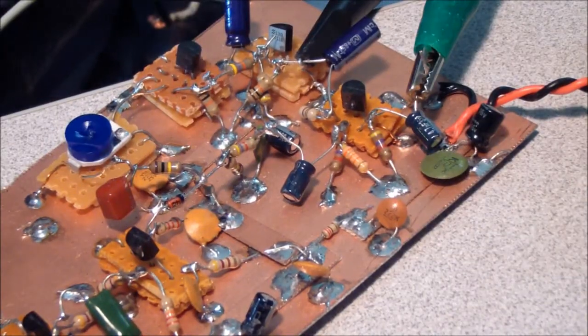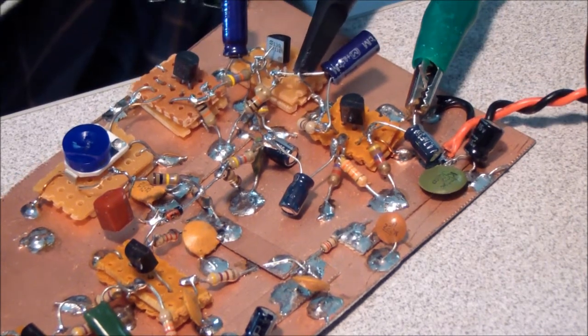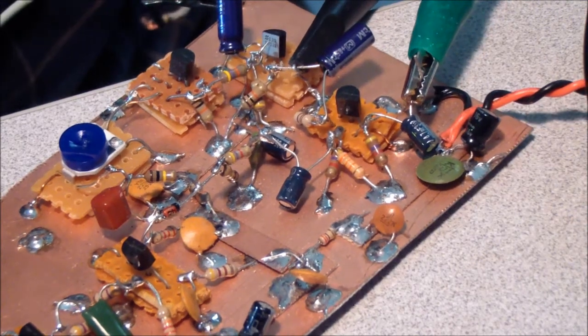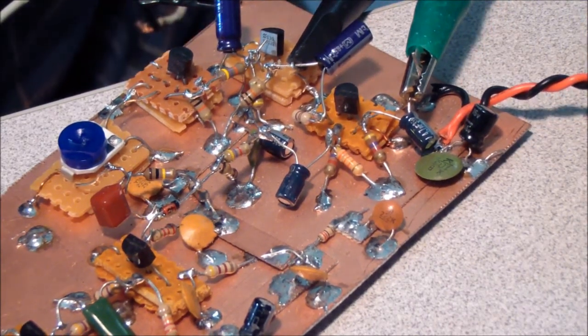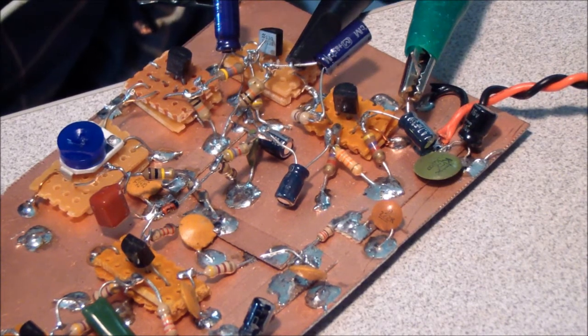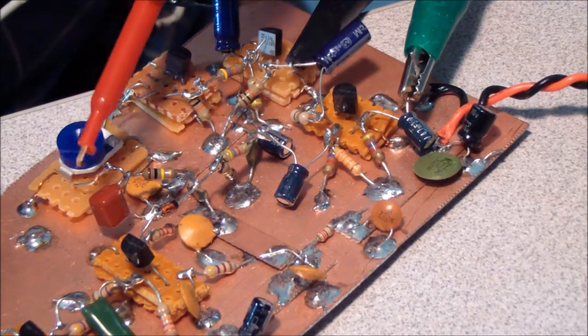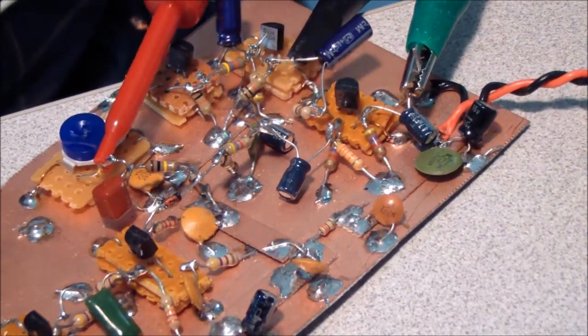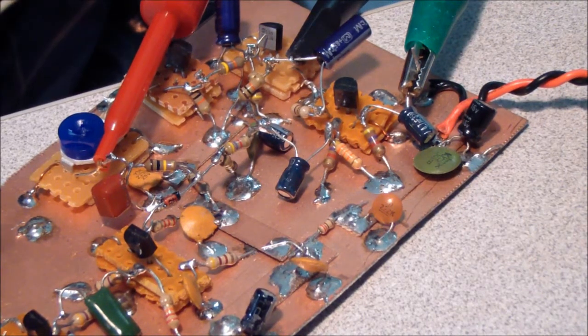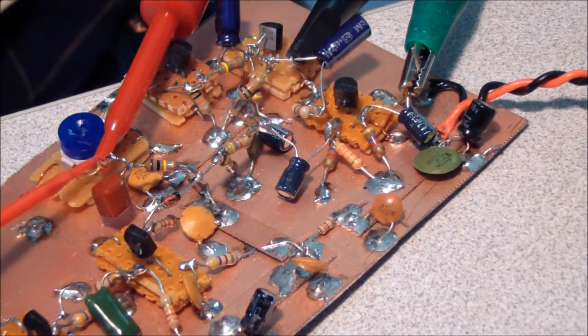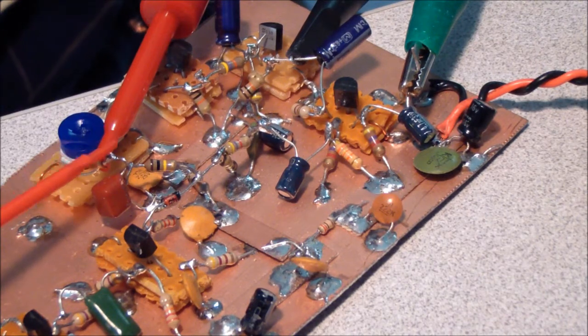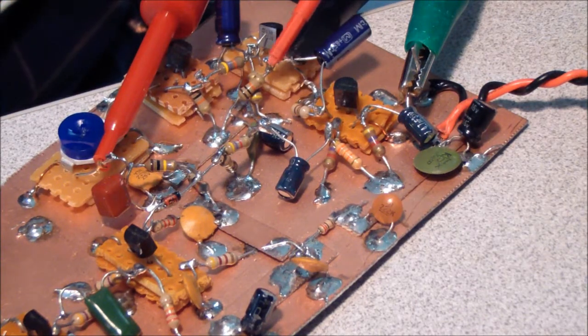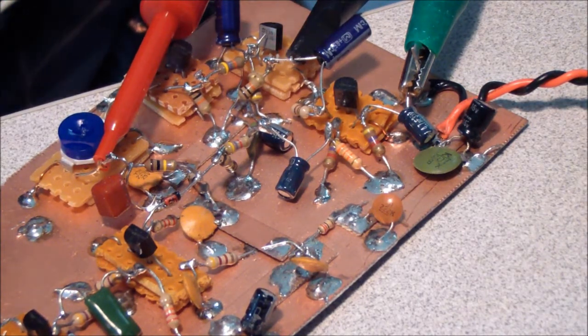The next thing I'm going to do, we have our scope probe connected to the collector of the second AGC transistor. And now I'm going to connect a high impedance FET voltmeter on the wiper of the 50K potentiometer. And I'm going to show you the relationship between the relative signal strength of the received station at this point, and how the AGC circuit reacts at this point.